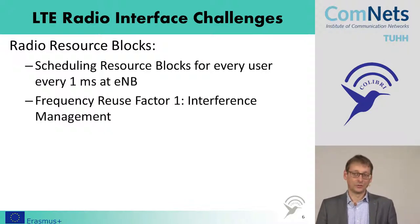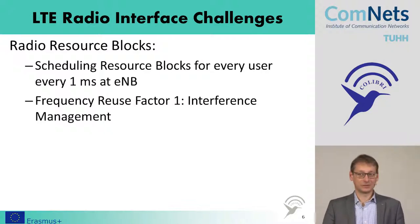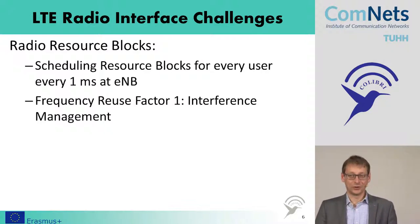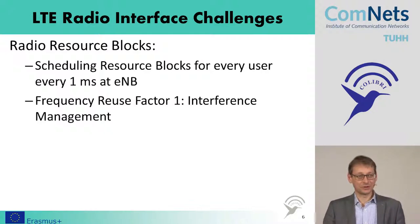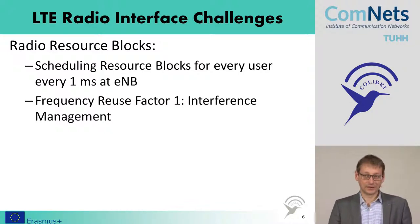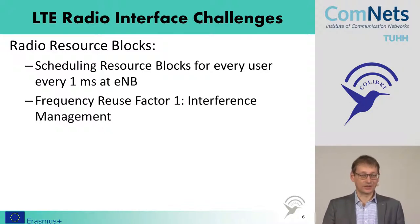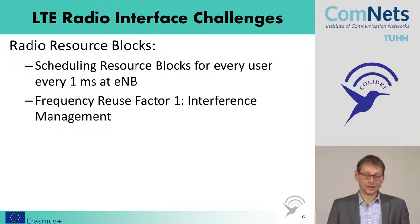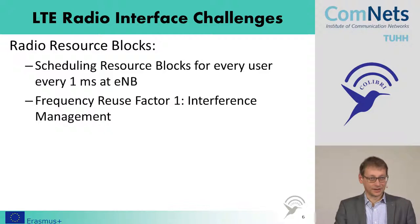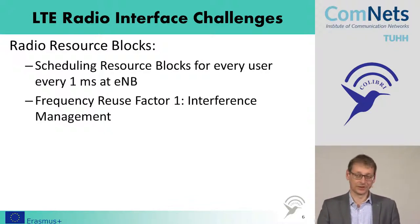Also, we do something differently than before — we have a frequency reuse factor of one. This means we can use any frequency in any cell, but this gives us a headache on how to do interference management. We would reuse the same frequency our neighbor cell is using, and we have to adapt to this and learn what the other one is doing. Since eNodeBs signal to each other but must schedule every millisecond, there's no time to coordinate directly. Instead, some frequencies are used for user equipment close to the base station, and some frequencies are used for users far away, which would not be reused in the neighboring cell.